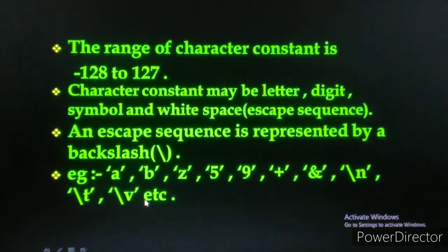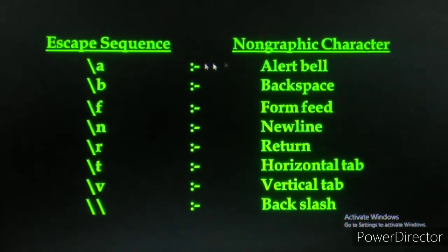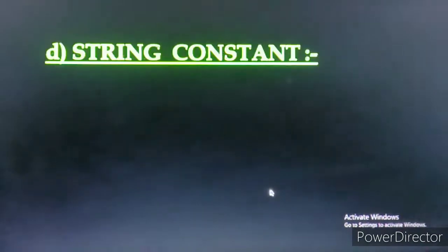Character constant एक letter, digit, symbol या white space हो सकता है। White space को backslash से represent किया जाता है। यह escape sequence है जो character constant को represent करता है। Escape sequence का size भी one byte होता है। इनका programming में specific काम होता है जैसे \a alert, \b backspace। यह सब previous class में explain करके पढ़ चुके थे।